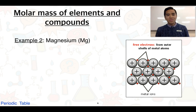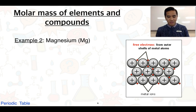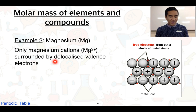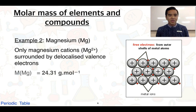Our second example involves a metallic substance — magnesium. We know that metallic substances have lattice structures, and you can see that to the right here. All metals can be represented by their chemical symbol, so aluminium will be Al, gold will be Au. Magnesium is only made up of magnesium cations surrounded by a sea of delocalised valence electrons. Its molar mass is simply the molar mass of a magnesium atom, which from our periodic table gives a value of 24.31 grams per mole.